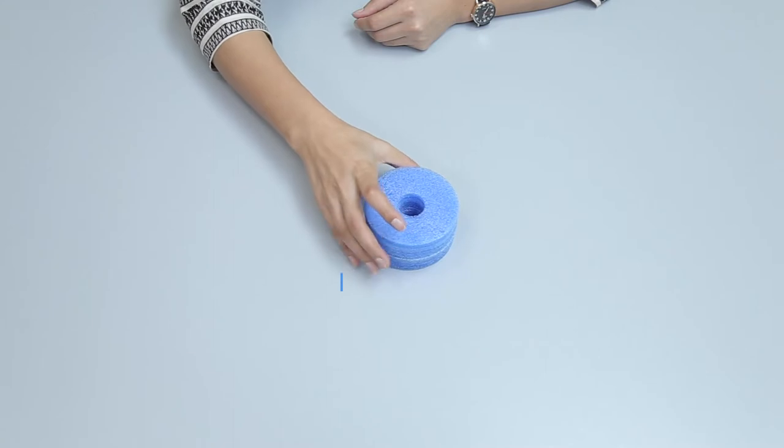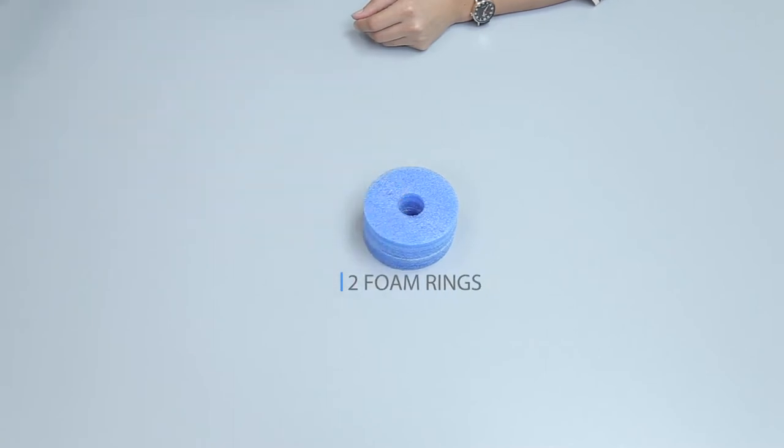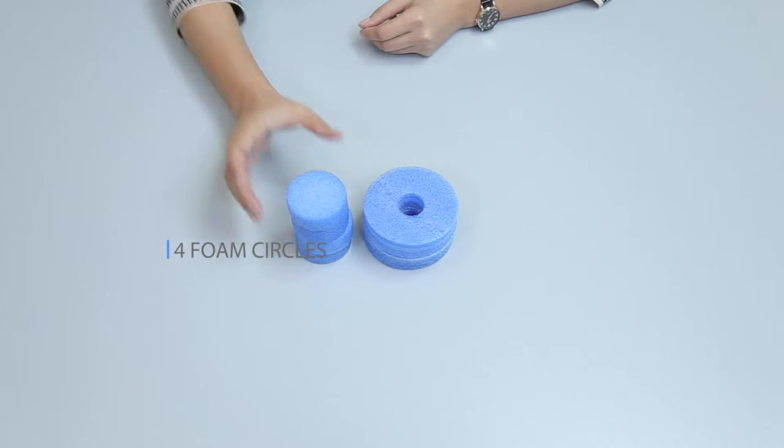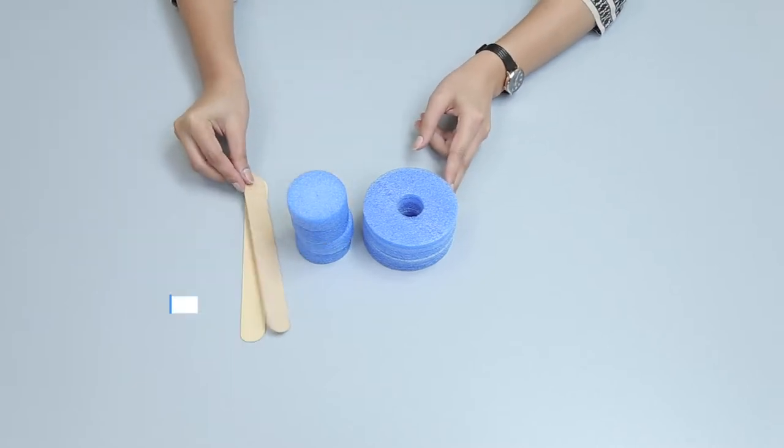Let's make an inclined plane using different items from the kit. For making a ramp, we need: two foam rings large with hole, four foam circles, two craft sticks,